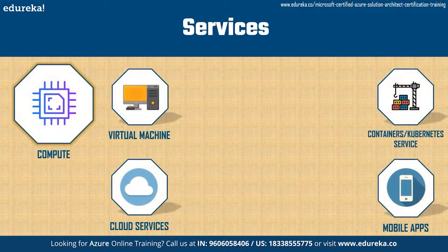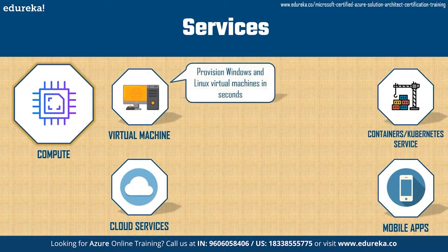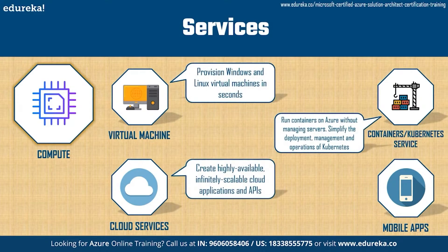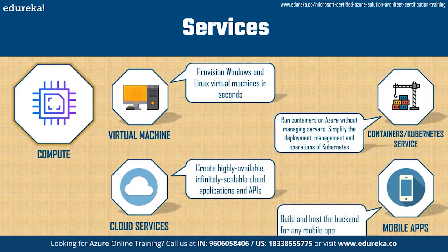The first service John needs is compute. He can use it to deploy and manage virtual machines, containers, and batch jobs, as well as support remote application access. Compute resources in the cloud can be configured with either public or private IP addresses depending on whether the resource needs to be accessible to the outside world. Services within compute include virtual machines, containers, Kubernetes service, cloud services, and mobile apps.